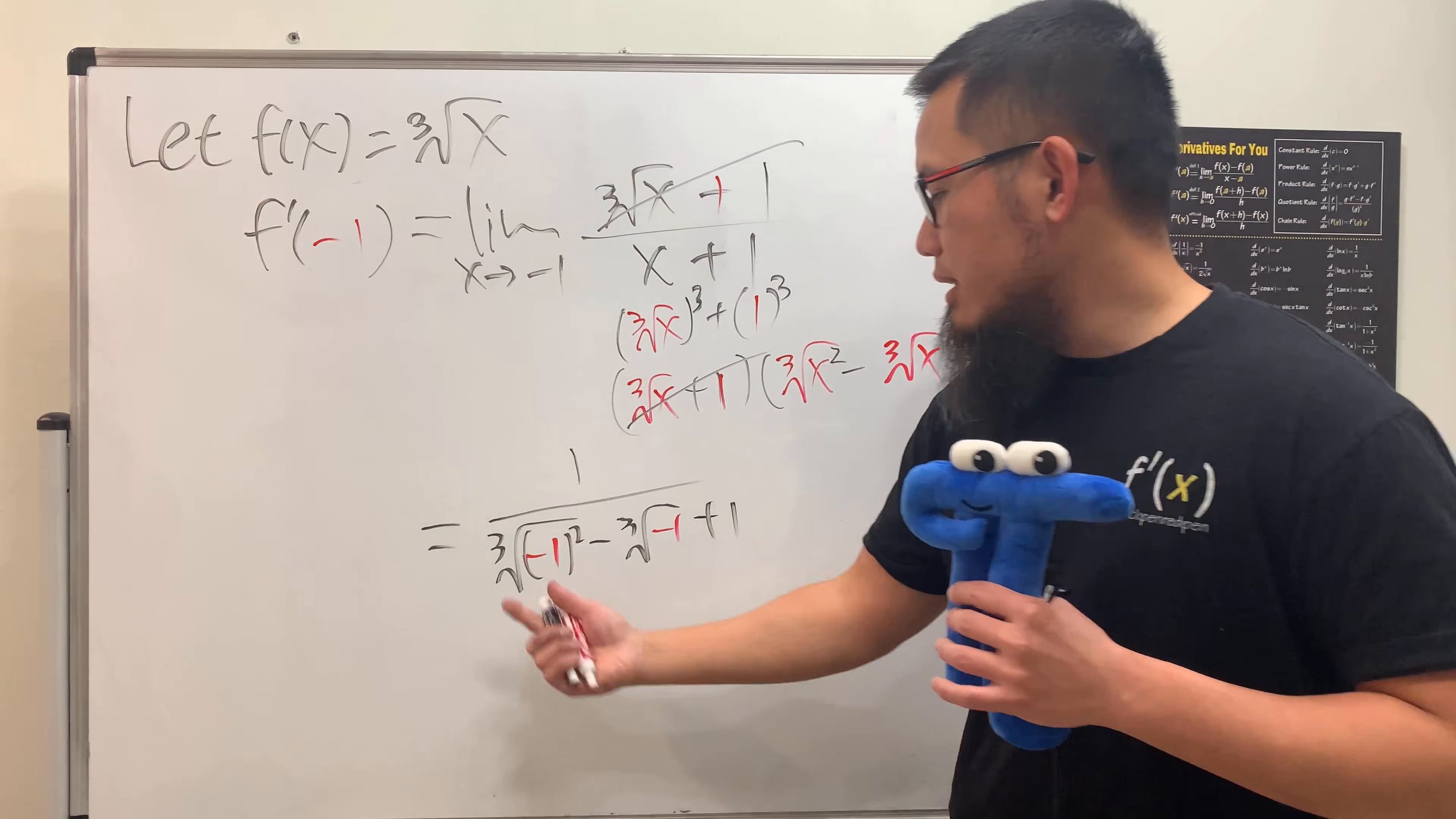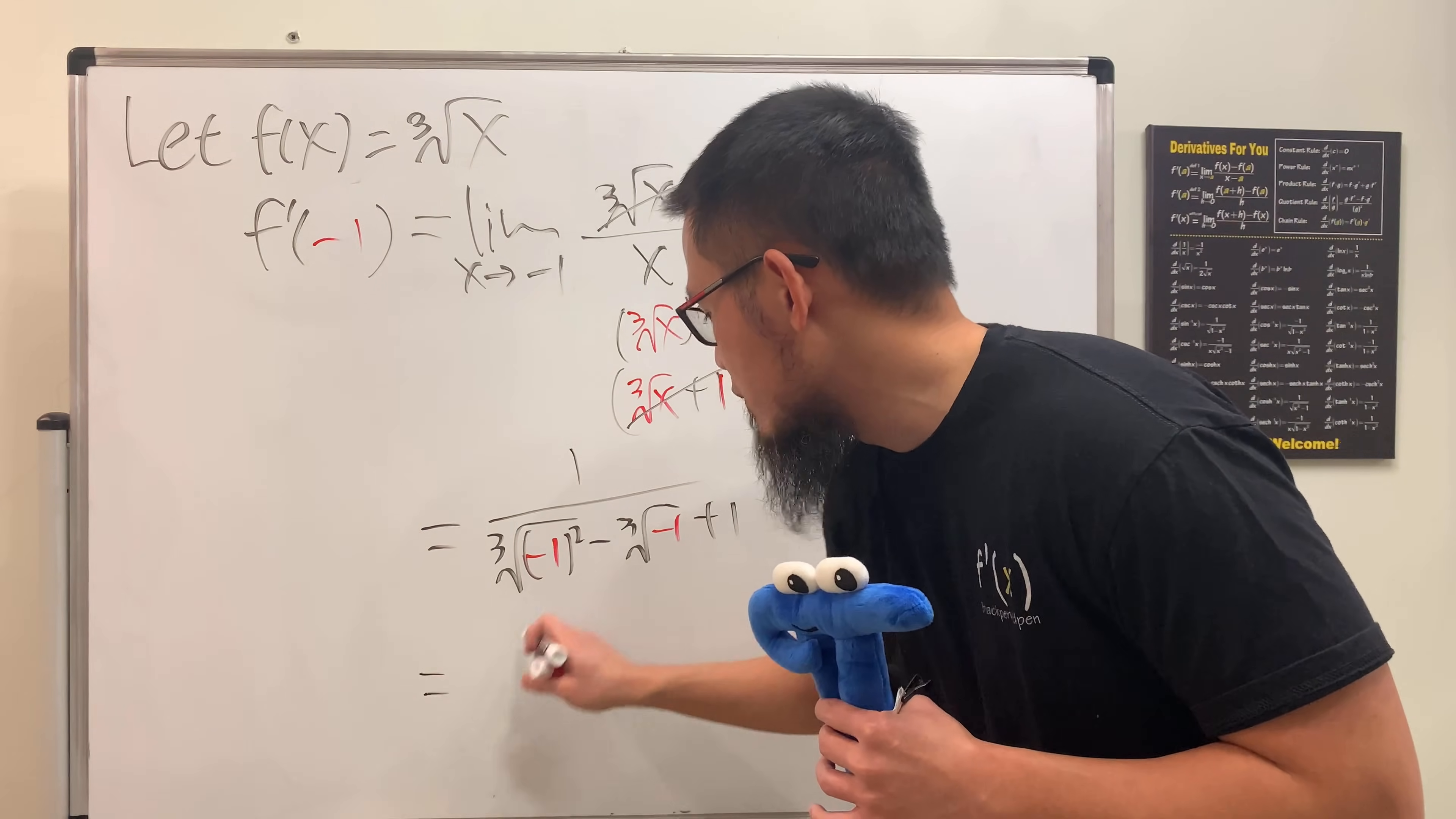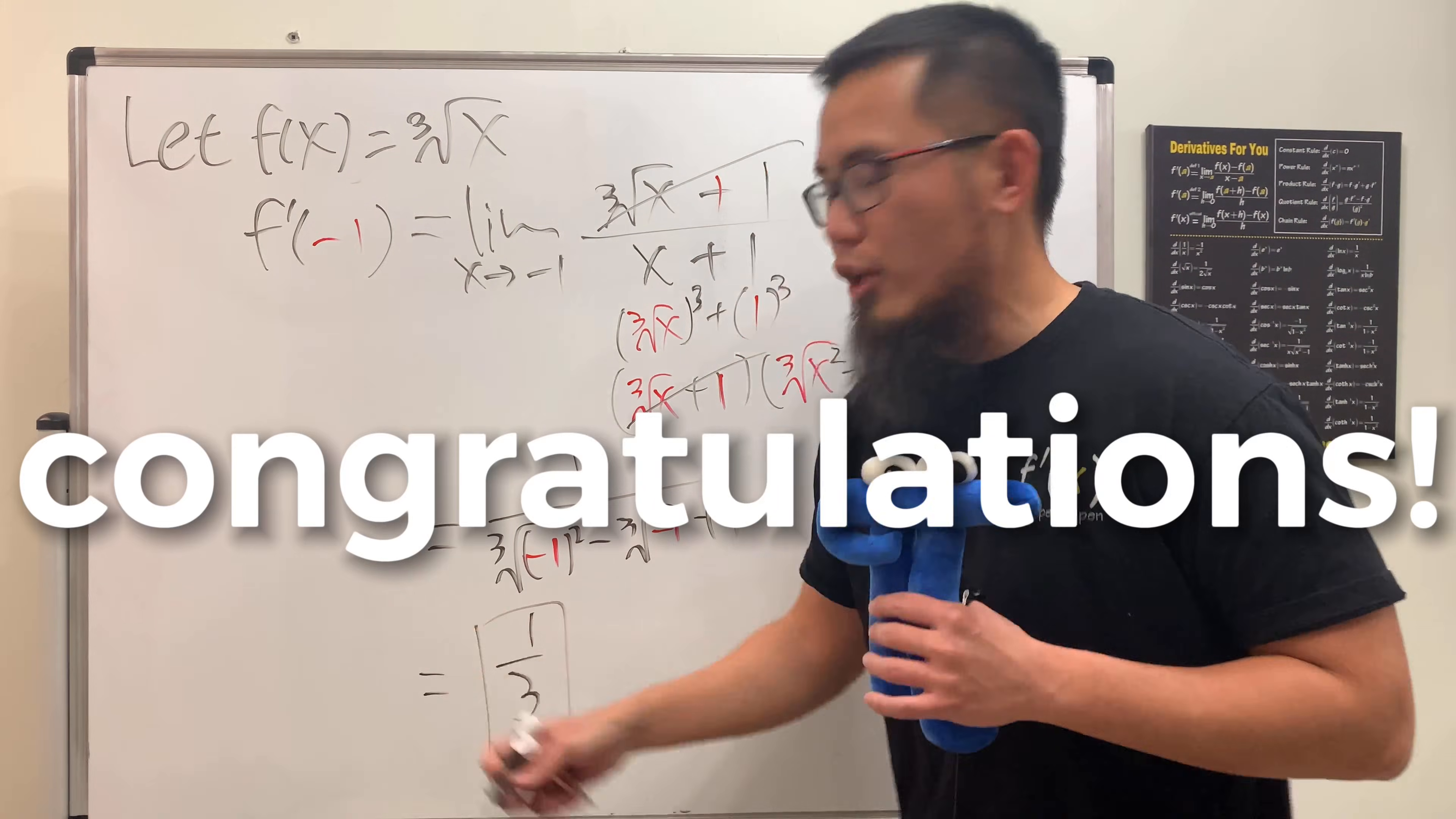so be really careful with that, and then put down minus cube root of negative 1, and then we have plus 1 right here. And you see this right here is actually just 1, and another 1, and then another 1. Although, take care that we have just 1 third, and congratulations, you get your $1,000.